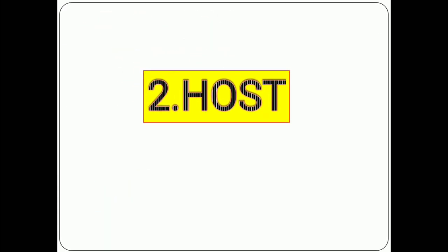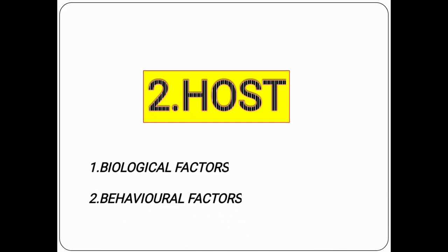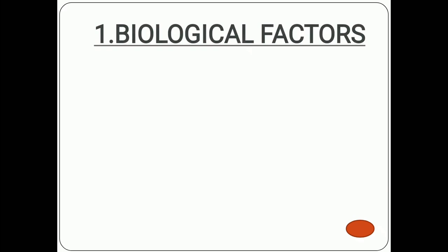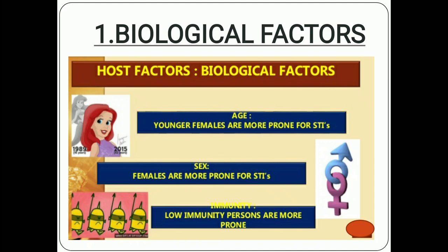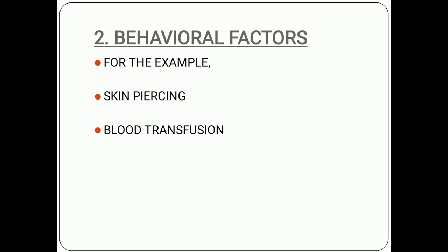The host refers to who is at risk. There are two factors: biological and behavioral. Biological factors include age — younger females are more prone to sexually transmitted diseases as the female reproductive system is more sensitive and susceptible to infection. Low immunity persons are also more prone to developing infection. Behavioral factors include skin piercing such as tattooing, where an infected person's needle can transmit infection, blood transfusion, sharing the needle of an infected person, and poor hygiene maintenance.